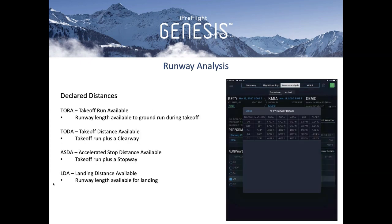One component used to calculate field length limits specifically is declared distances. This includes your Takeoff Run Available (TORA) — your runway length available for ground run during takeoff — the Takeoff Distance Available (TODA), which is your takeoff run plus a clearway, the Accelerate-Stop Distance Available (ASDA), your takeoff run plus a stopway, and Landing Distance Available (LDA), your runway length available for landing. Using the full runway length could result in an incorrect field length limit weight, so these declared distances are used in all of our calculations and are also visible in the app.